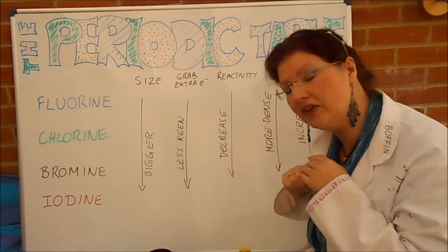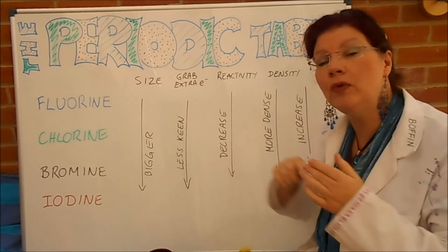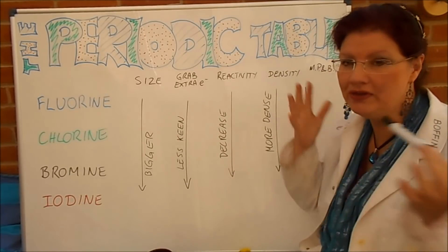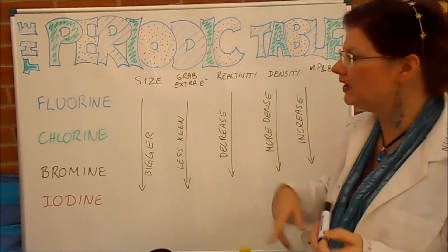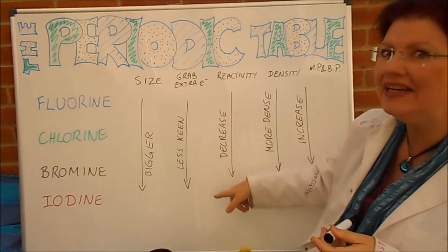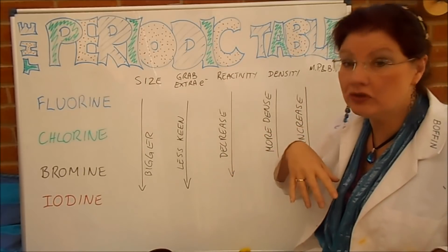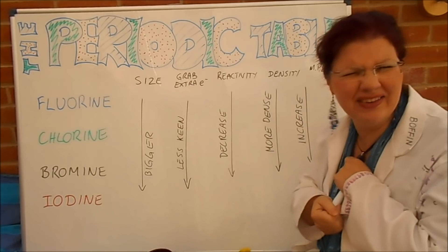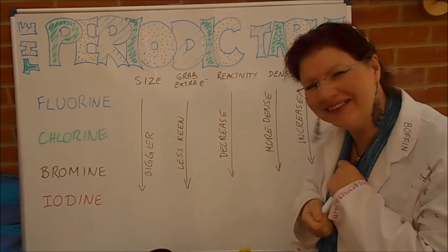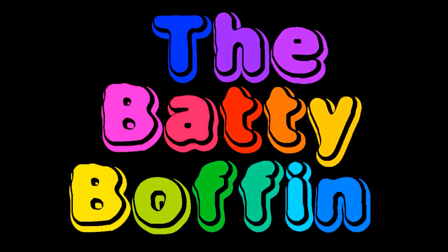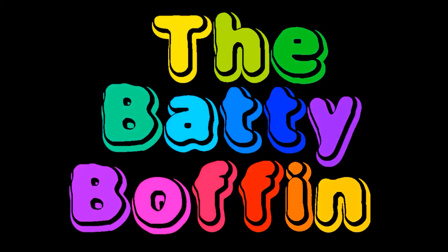So that's enough about this on the halogens. In the next video, we'll be talking about some of their common reactions, including displacement reactions, which is all to do with their keenness to grab extra electrons. So we're talking about displacements, the formations of salts, and all that kind of thing. I'll see you the next time, Batty fans. Mwahaha!